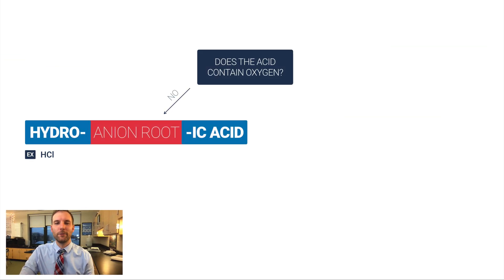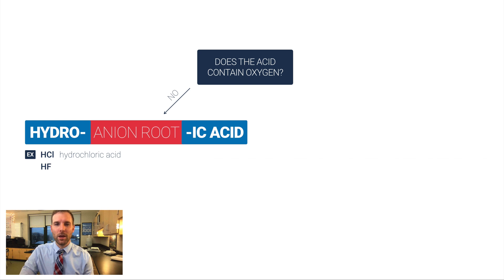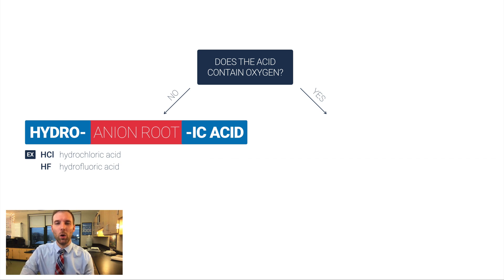Going back to the flowchart with some examples: HCl is an acid because it starts with H, has no metal so it's covalent, and does not contain oxygen. We name this hydrochloric acid — the anion root being 'chlor.' Here's another example: HF would be hydrofluoric acid. Careful on the spelling — a lot of students want to write F-L-O-U-R-I-C, but that's not right. So: hydrofluoric.